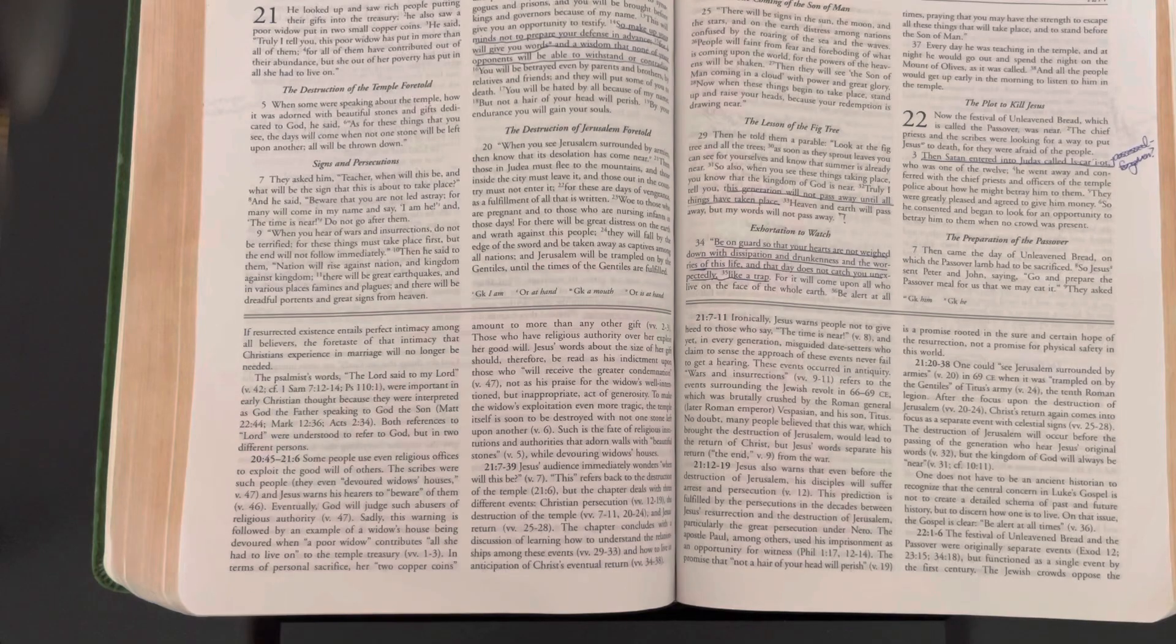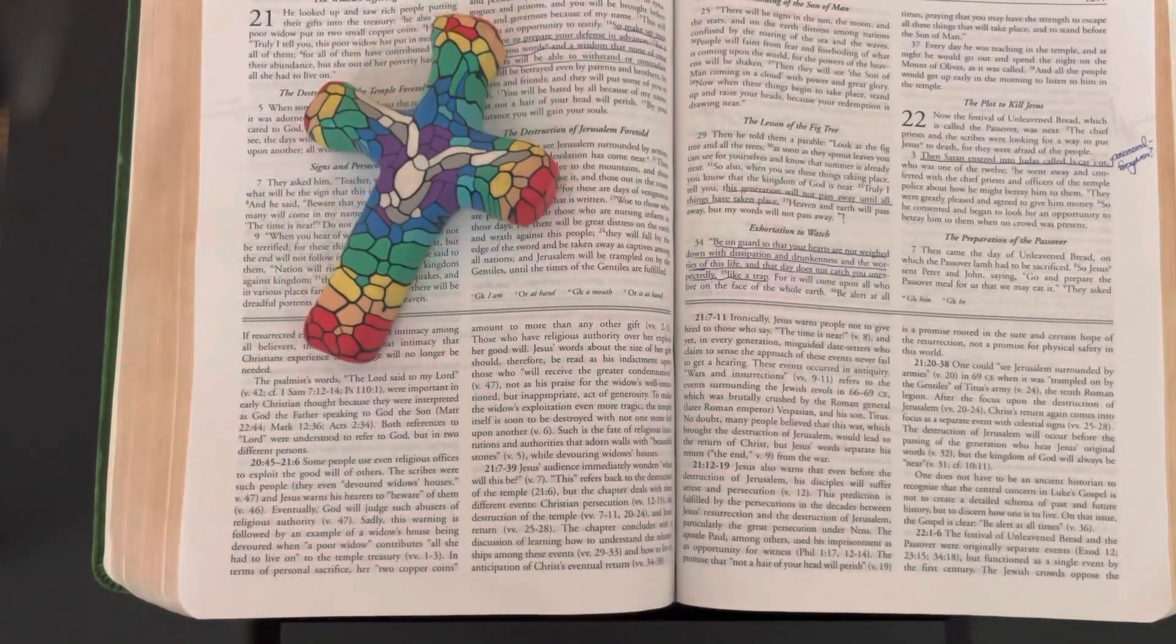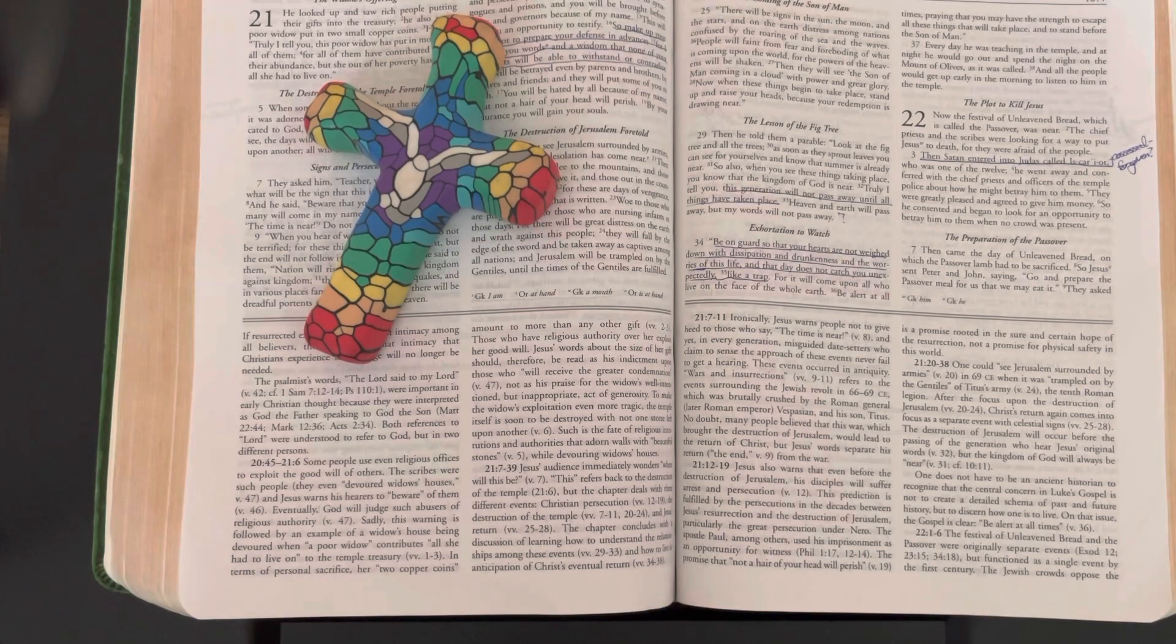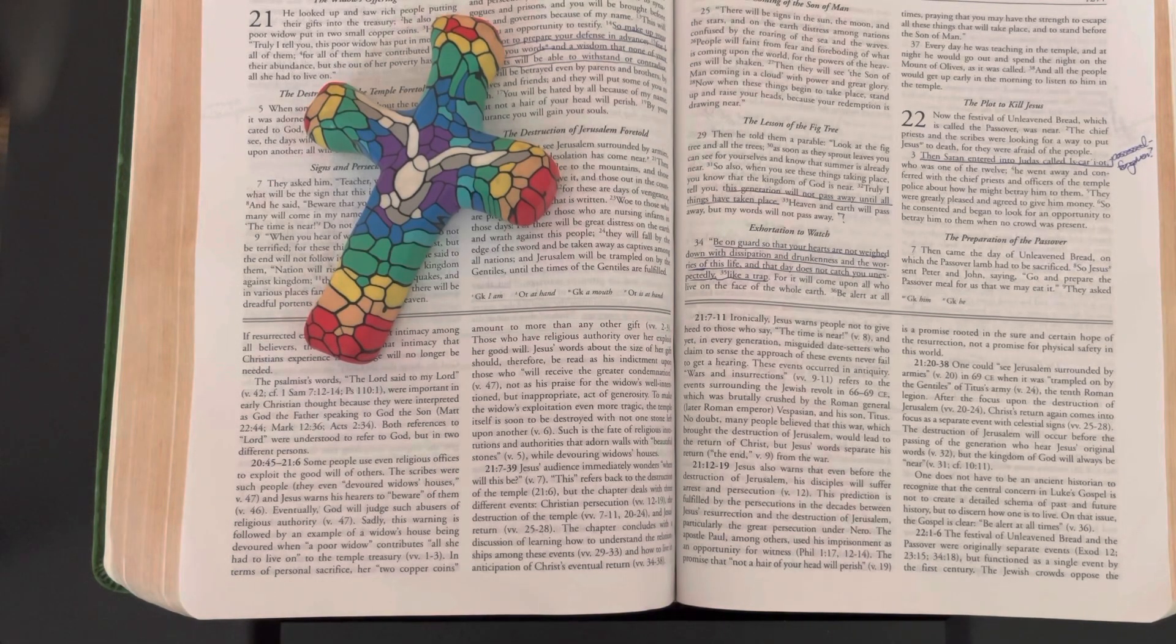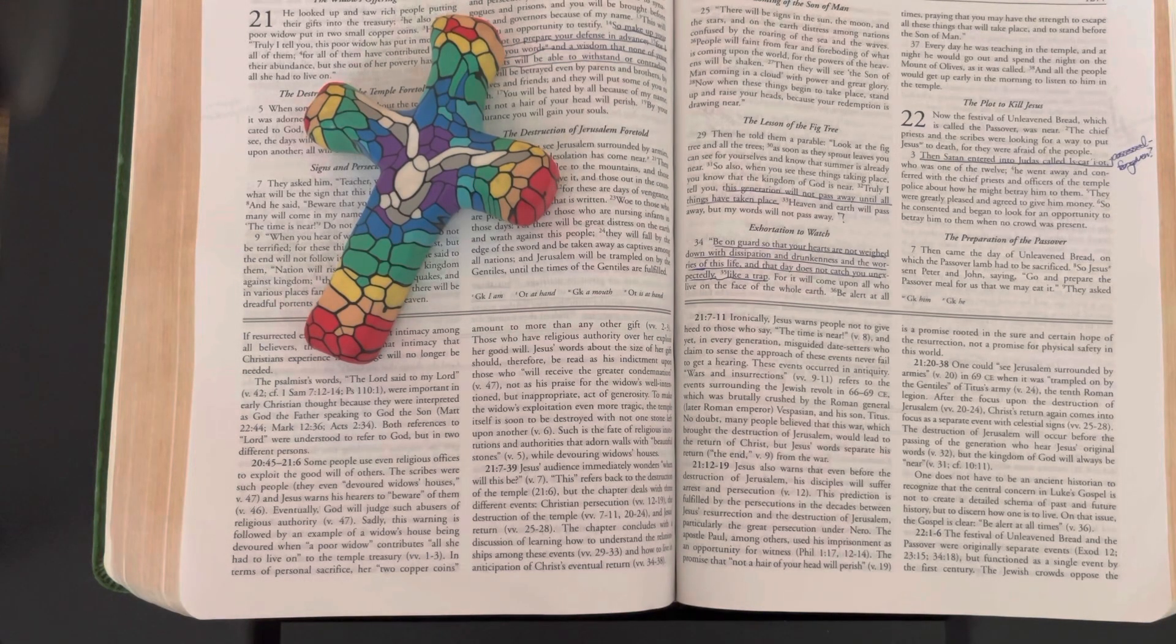Now the festival of unleavened bread, which is called the Passover, was near. The chief priests and the scribes were looking for a way to put Jesus to death, for they were afraid of the people. Then Satan entered into Judas called Iscariot, who was one of the twelve. He went away and conferred with the chief priests and officers of the temple police about how he might betray him to them.